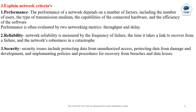Third question: Explain network criteria. First is Performance. The performance of the network depends on a number of factors, including the number of users, the type of transmission medium, the capability of the hardware, and the efficiency of the software. Performance is evaluated on two networking metrics: throughput and delay. Second is Reliability. Network reliability is measured by the frequency of failure and the time it takes the link to recover from a failure. Third is Security. Security issues include protecting data from unauthorized access and protecting the data from damage.